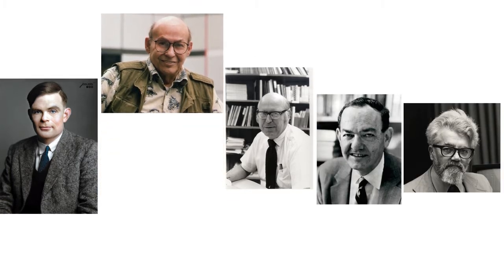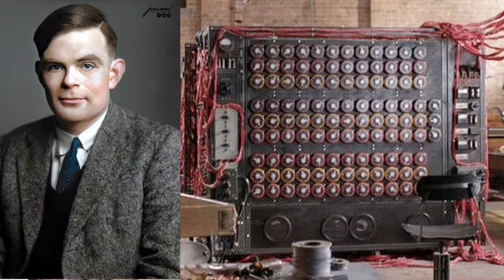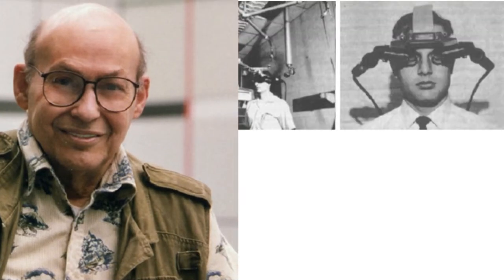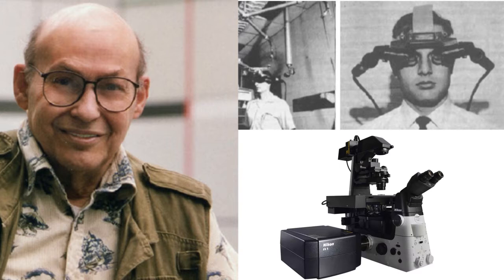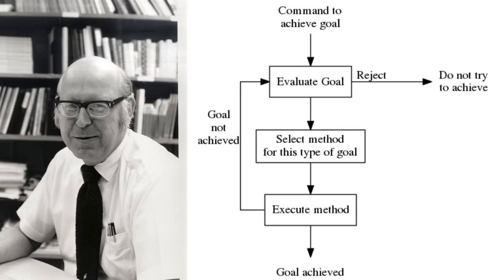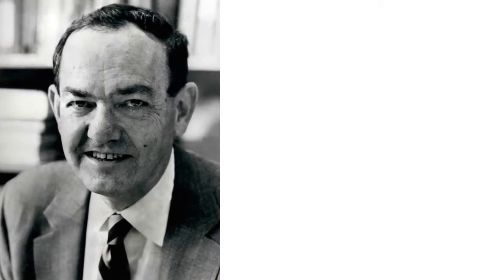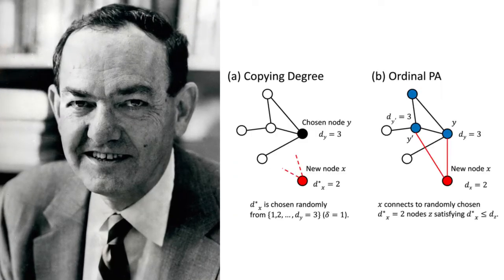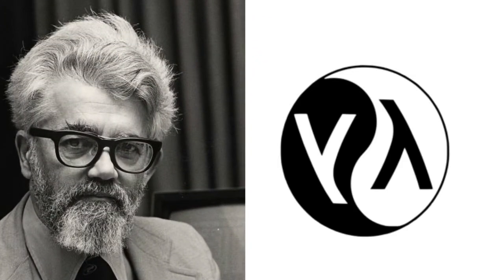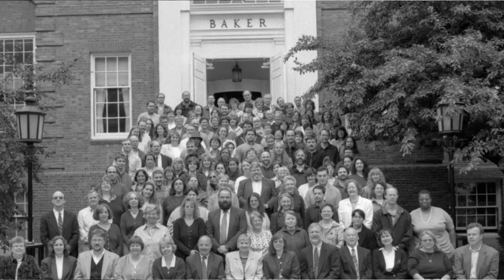Alan Turing is famous for his Turing machine and working on deciphering the German Enigma code. Marvin Minsky's inventions include the first head-mounted graphical display and a confocal microscope. Alan Newell worked on two of the earliest AI programs: the Logic Theory Machine and the General Problem Solver. Herbert Simon proposed a preferential attachment mechanism to explain power law distributions. John McCarthy created the programming language Lisp, invented garbage collection, and organized the Dartmouth conference where artificial intelligence was started as a field.